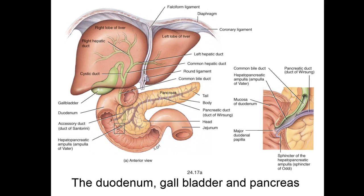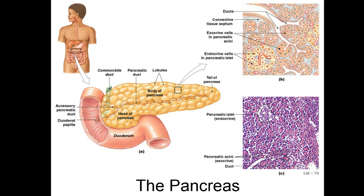That duct system all dumps into the duodenum. The pancreas acts as an exocrine gland here, and the pancreatic fluid is very important for neutralizing the acid chyme that comes out of the stomach. It also plays a major role in breaking products apart so they can become the smallest molecule possible to be taken into the bloodstream.